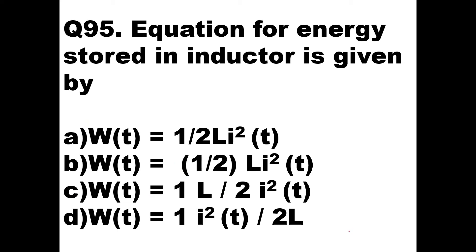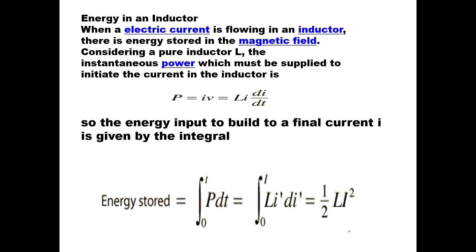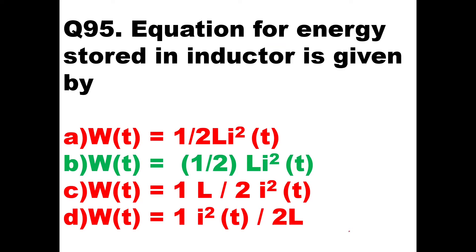Then we will go to the next question. The equation for energy stored in an inductor is given by what? It is half Li squared. Option B will be the right answer. When an electric current is flowing in an inductor, there is energy stored in the magnetic field. Considering a pure inductor L, the instantaneous power supplied to initiate the current is P = IV = Li(di/dt). Energy stored equals the integral from 0 to i of power dt, which gives half Li squared. So option B, half Li squared, is the right answer.